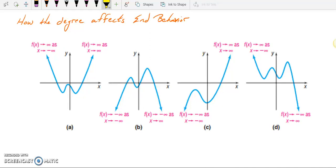Think of a graph that has end behavior that acts like this, such as 2 up. The function that comes to my mind is f of x equals x squared.